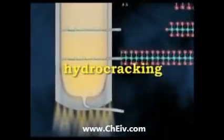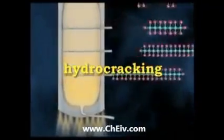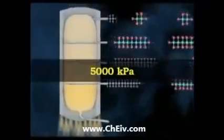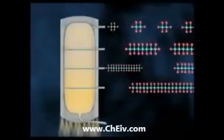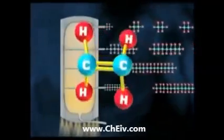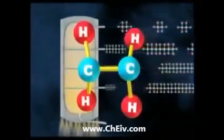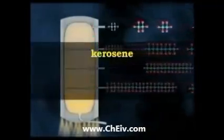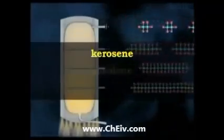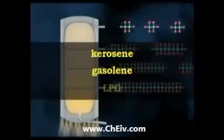In hydrocracking, crude oil is heated at very high pressure, usually around 5000 kilopascals, in the presence of hydrogen with a metallic catalyst such as platinum, nickel or palladium. This process tends to produce saturated hydrocarbons such as shorter carbon chain alkanes, because it adds a hydrogen atom to alkenes and aromatic hydrocarbons. It is a major source of kerosene jet fuel, gasoline components and LPG.